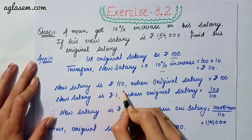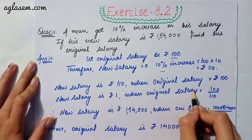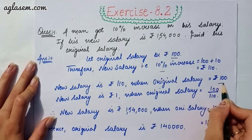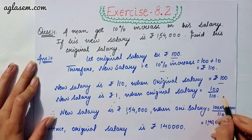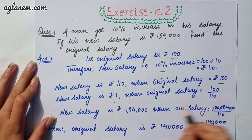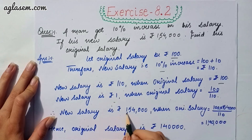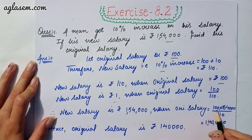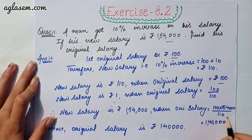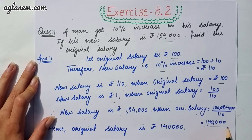So if the new salary is 110, then the original salary is rupees 100. If new salary is rupees 1, then original salary is 100 upon 110. Therefore, since the original salary is given as 154000, the original salary will be 100 into 154000 divided by 110, which gives 140000.